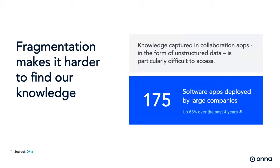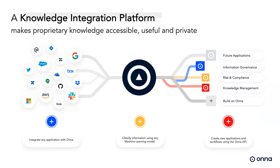Enterprise knowledge has become fragmented and difficult to access, costing businesses huge amounts of time and money just searching for information. ONA's knowledge integration platform can connect to over 30 of the world's most popular workplace applications, collect and process all of that data in real time, enrich it with machine learning and natural language processing, and create a rich index to enable critical workflows. We currently have products helping enterprise organizations with information governance, risk and compliance, and knowledge management, plus an open API for partners.